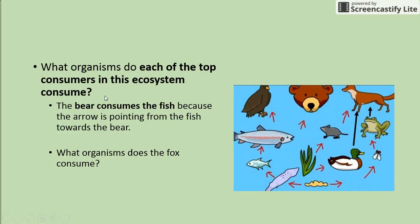Write in your notes what organisms each top consumer eats. We already talked about the hawk. The bear consumes the fish because the arrow points from the fish toward the bear. Now write in your notes who the fox consumes and how you know based on the arrows.